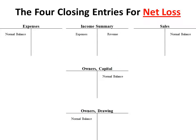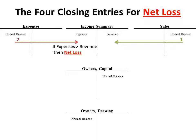What happens if there's a net loss? We do the exact same process. Sales goes into income summary as a credit, and expenses go into income summary as a debit. In this case, the debit side — the expense side — is going to be greater than the revenue, so that's a net loss. We move that into owner's capital as a debit, because that decreases the owner's worth. Then our drawing account moves back into owner's capital, which also decreases it.